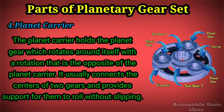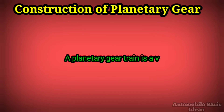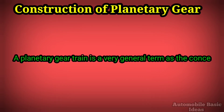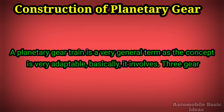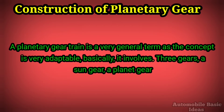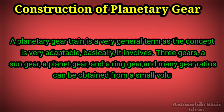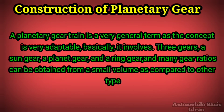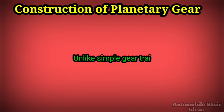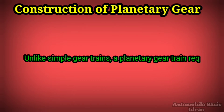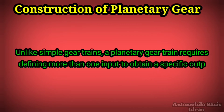Construction of planetary gear. A planetary gear train is a very general term, as the concept is very adaptable. Basically, it involves three gears: a sun gear, a planet gear, and a ring gear. Many gear ratios can be obtained from a small volume compared to other types of gear trains, which take up more space.